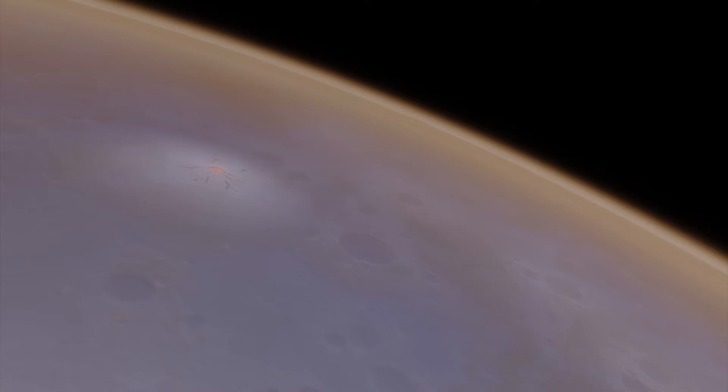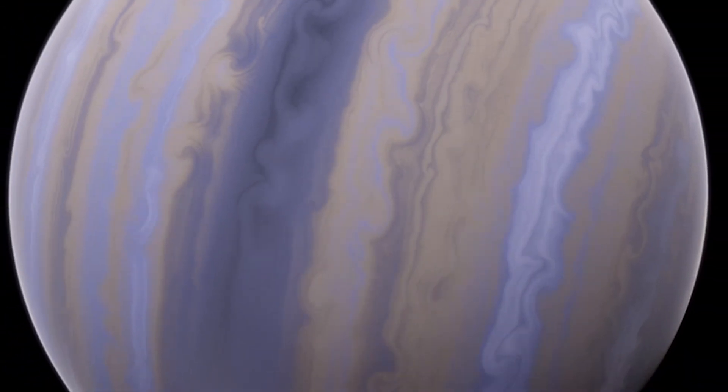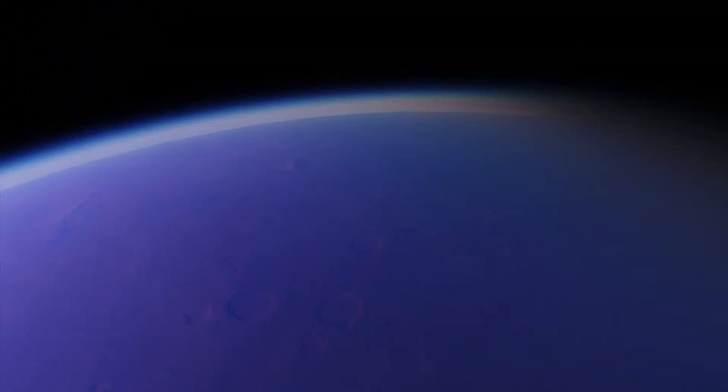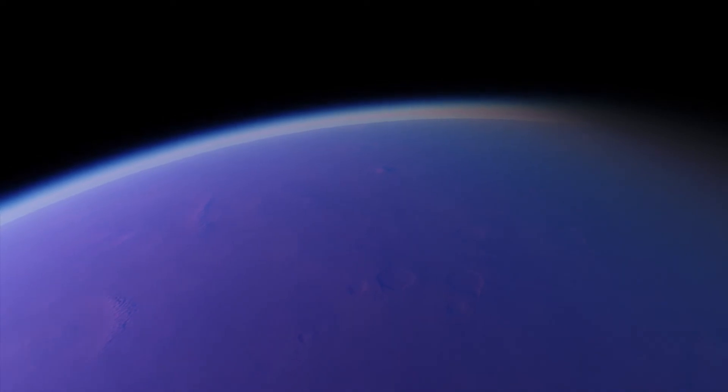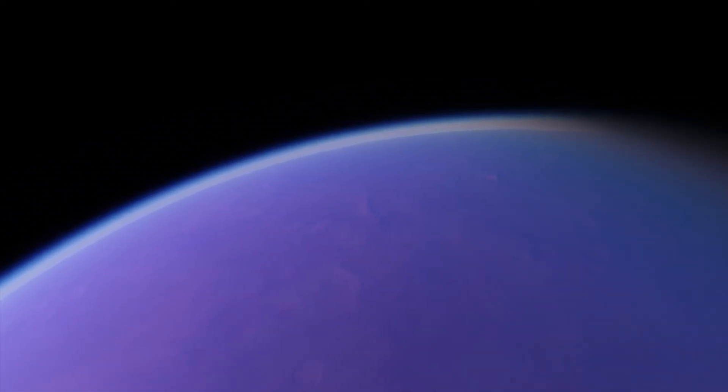Each planet is bigger and more massive than Earth, with the largest ones being similar in size to Uranus or Neptune. All of these planets are mixtures of rock and gases, possibly including water.